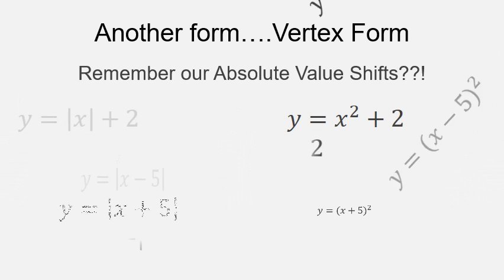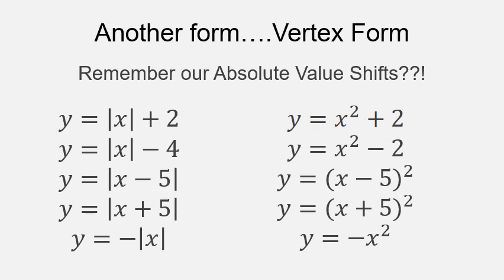So another form that we're going to explore is vertex form. Remember those absolute value shifts? They still apply, meaning if this meant up 2, then this also means up 2. So we still use those same shifts in the same way.